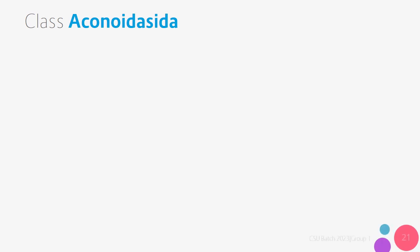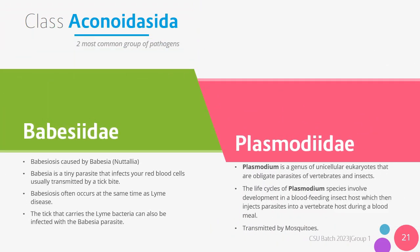The first class under phylum Apicomplexa is the class Aconoidasida. Under this group, there are two common groups of pathogens: first, we have the Babesiidae, and second, the Plasmodiidae. Under the family Babesiidae, this family causes the disease babesiosis, which is a blood infection caused by a tiny parasite, for example the Babesia microti. The Babesia parasites infect your red blood cells and are usually transmitted by a tick bite. It is notable that babesiosis often occurs at the same time as Lyme disease, and the tick that carries the Lyme bacteria can also be infected with the Babesia parasite.